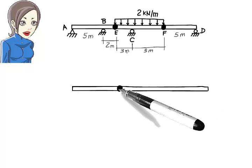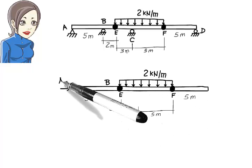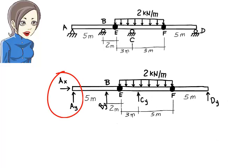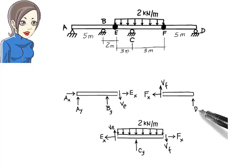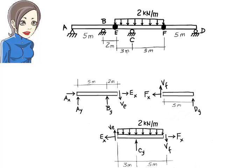The number of support reactions, therefore, is 5. We have two reactions at the pin support and one reaction at each roller support. The two hinges divide the beam into three segments. When we cut the beam segments at the hinges, in effect we are introducing four more unknowns. We are introducing a shear force and an axial force at each cut.